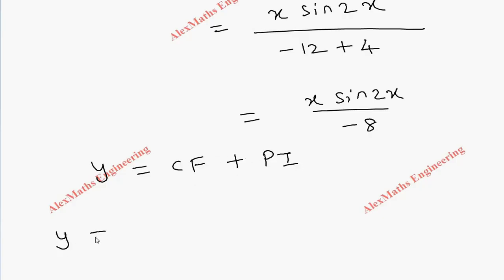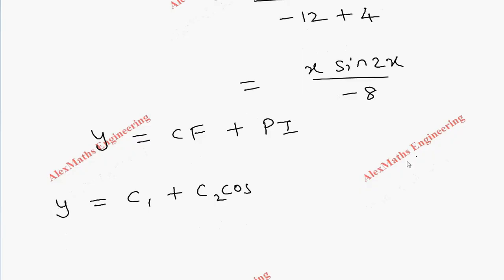So y is equal to c₁ plus c₂cos(2x) + c₃sin(2x), then we have -8 here, so minus x·sin(2x)/8.